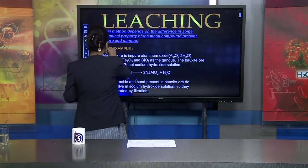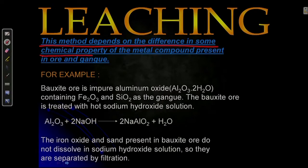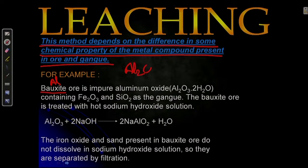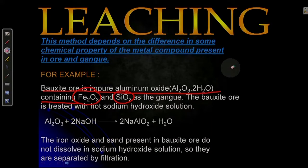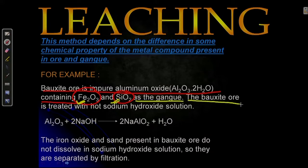This method depends on differences in some chemical property of the metal compound present in the ore and gangue. For example, if we talk about bauxite ore — bauxite is basically the ore of aluminium, whose formula is Al₂O₃·xH₂O. Bauxite ore is impure aluminium oxide containing two types of impurities: iron oxide (Fe₂O₃) and silicon dioxide (SiO₂). There is also a third impurity called titanium oxide, which can appear in your paper. These are the gangue.